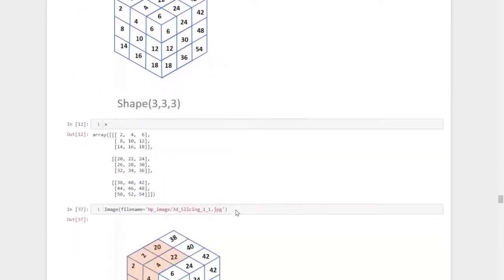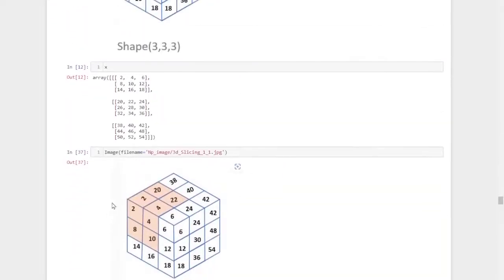Suppose we want to trim out certain elements from this NumPy array. For example, from the first layer 2, 4, 8, 10 and from the second layer 20, 22, 26 and 28. Both the 26 and 28 are not visible here, but they are actually exactly behind 8 and 10.